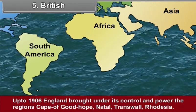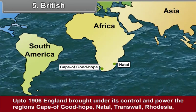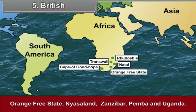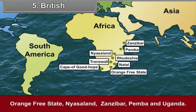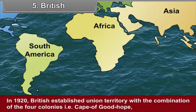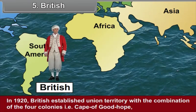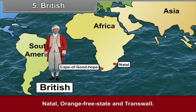Britain was not behind among European countries to establish colonies in Africa. The British established their market for the slave trade in Sierra Leone and then established a colony for escaped Negro slaves. Up to 1906, England brought under its control and power the regions of Cape of Good Hope, Natal, Transvaal, Rhodesia, Orange Free State, Nyasaland, Zanzibar, Pemba and Uganda. In 1920, the British established a Union territory with the combination of four colonies: Cape of Good Hope, Natal, Orange Free State and Transvaal.